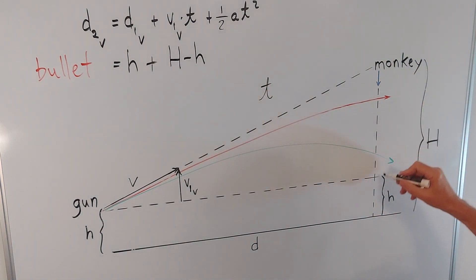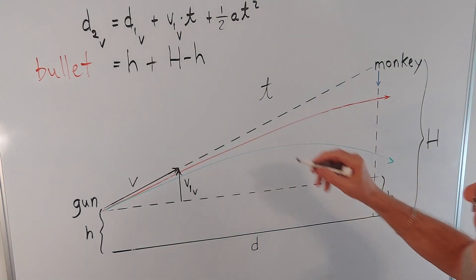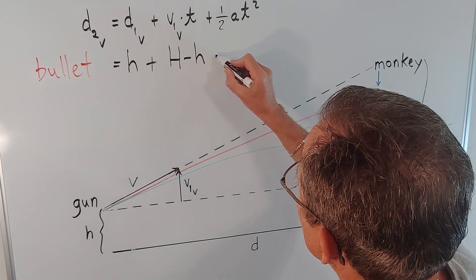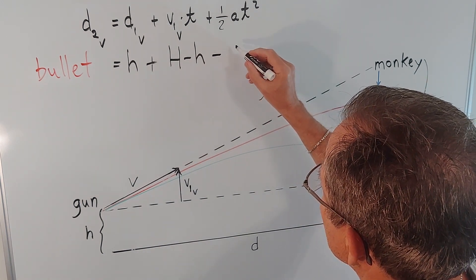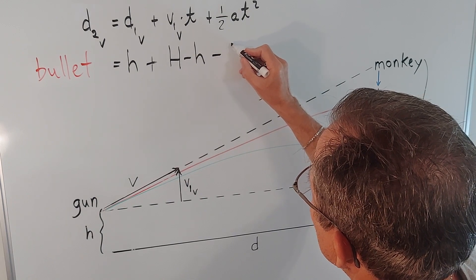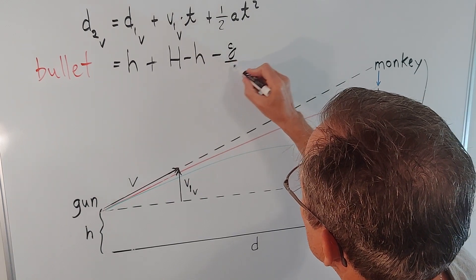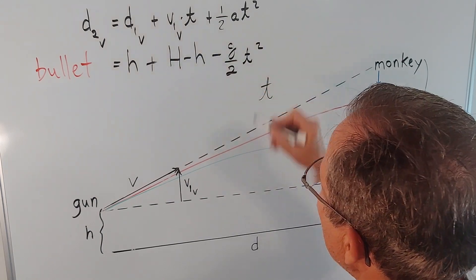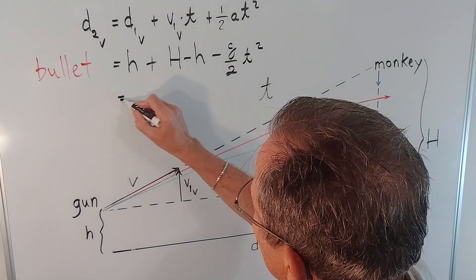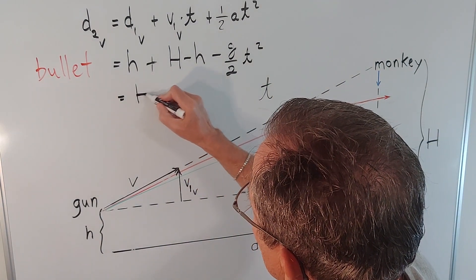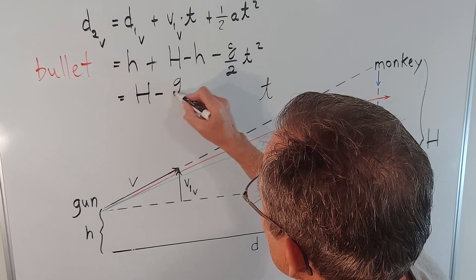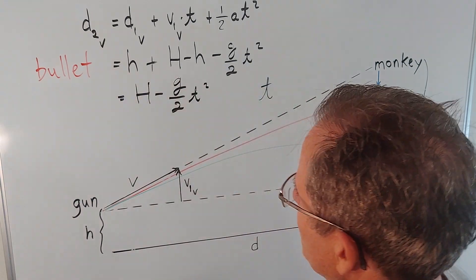So that is simply going to be H minus little h, this distance from here to here. The acceleration due to gravity is minus g. So that's minus g over 2 times t squared. And you can see that these h's cancel. So that's H minus g over 2 times t squared.